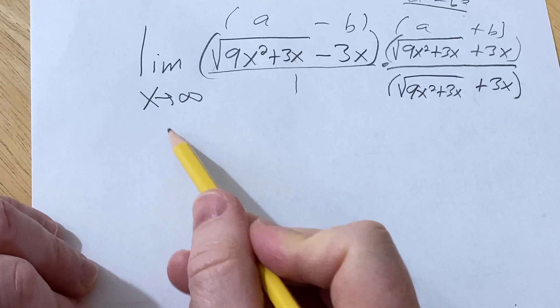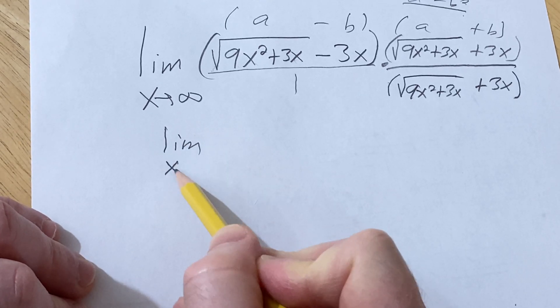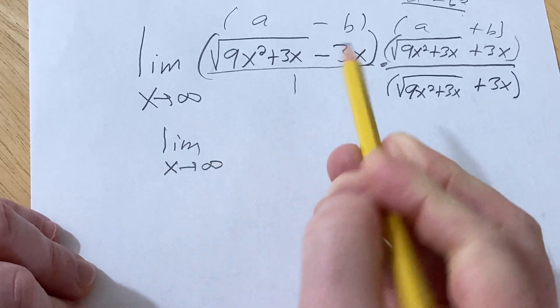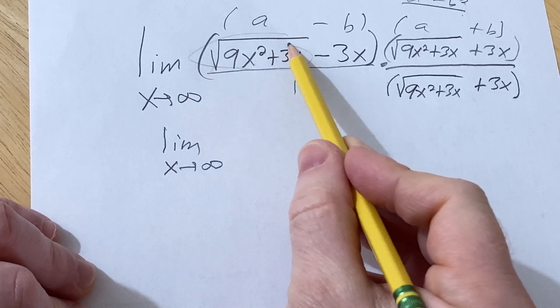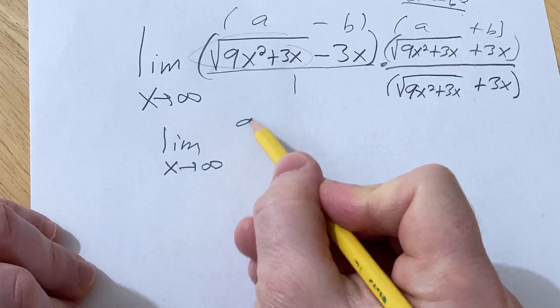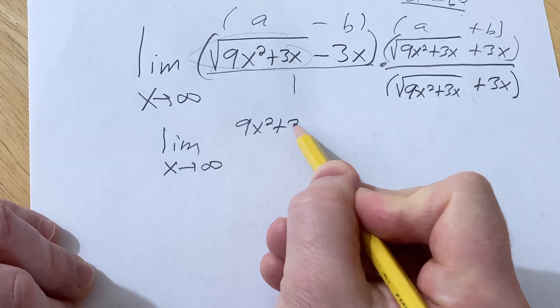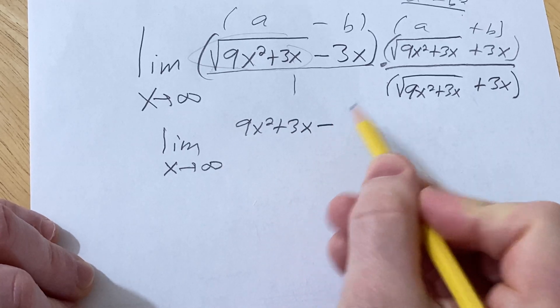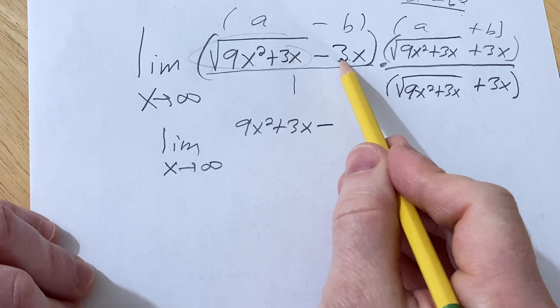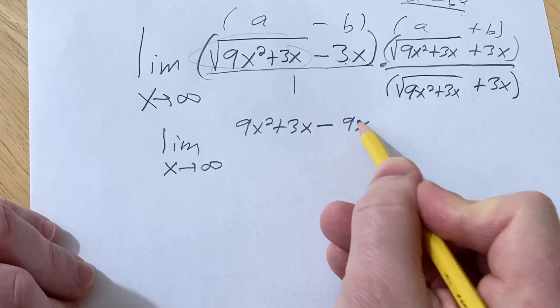So here this is the limit as x approaches infinity. So this piece here is our a, so when we square it, we're just going to get 9x squared plus 3x minus, and this is our b, so when we square it, we're going to square the 3 and square the x, so we get 9x squared.